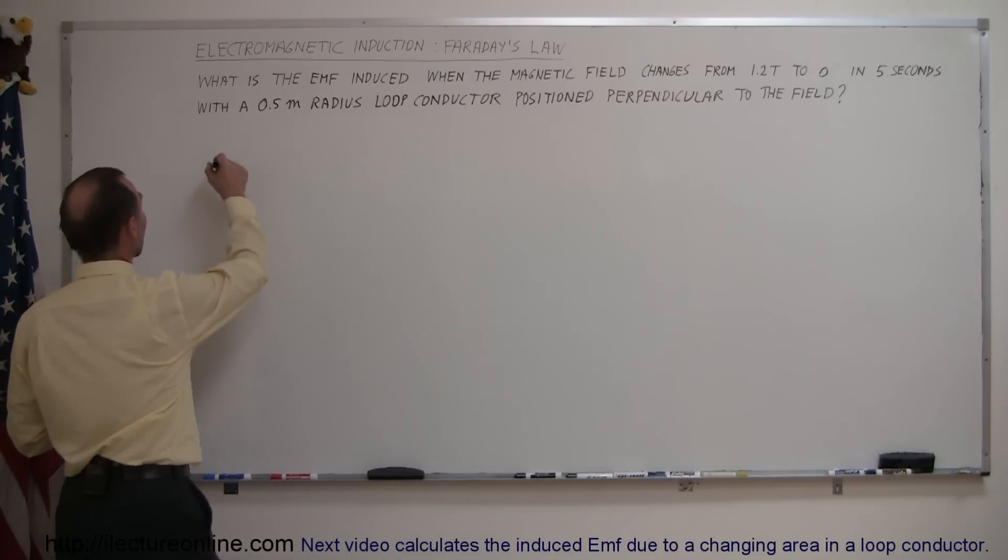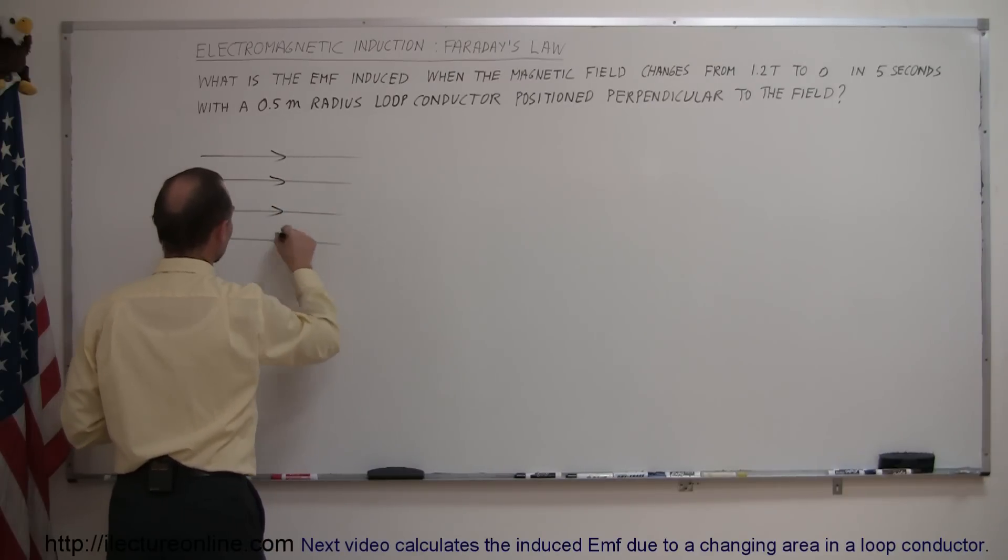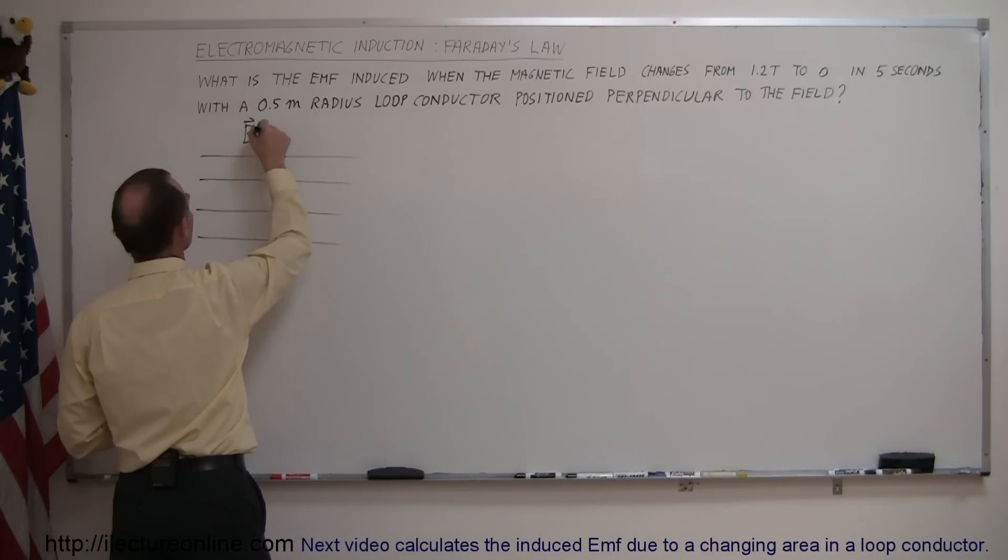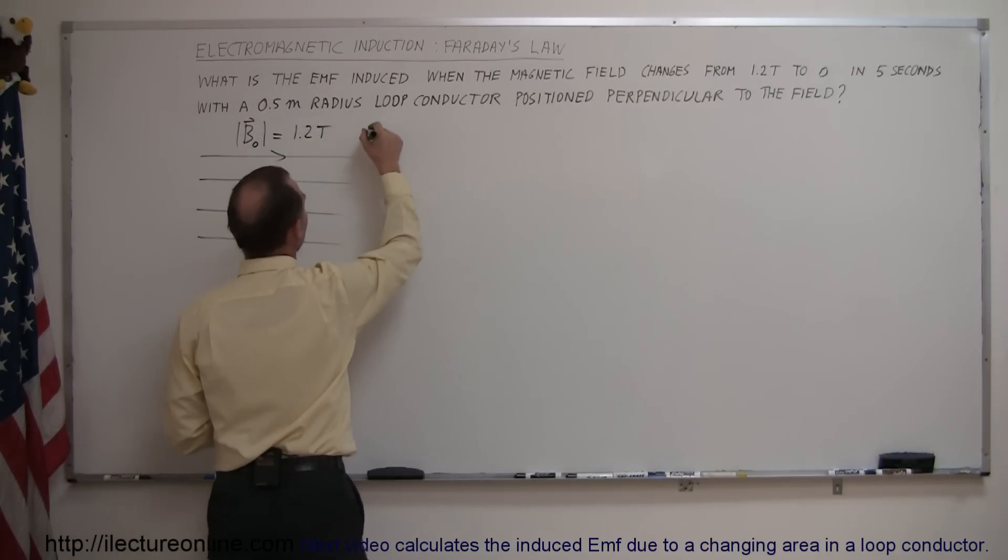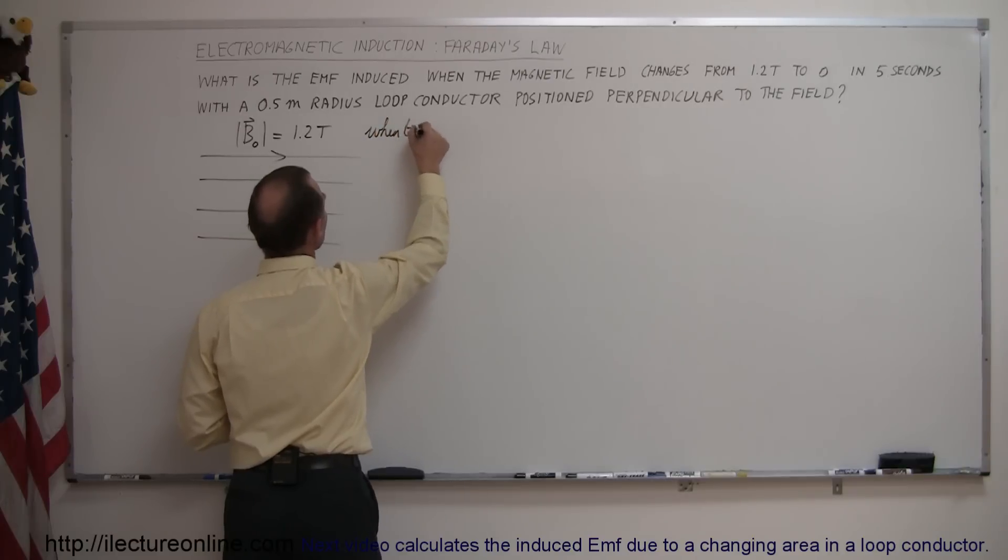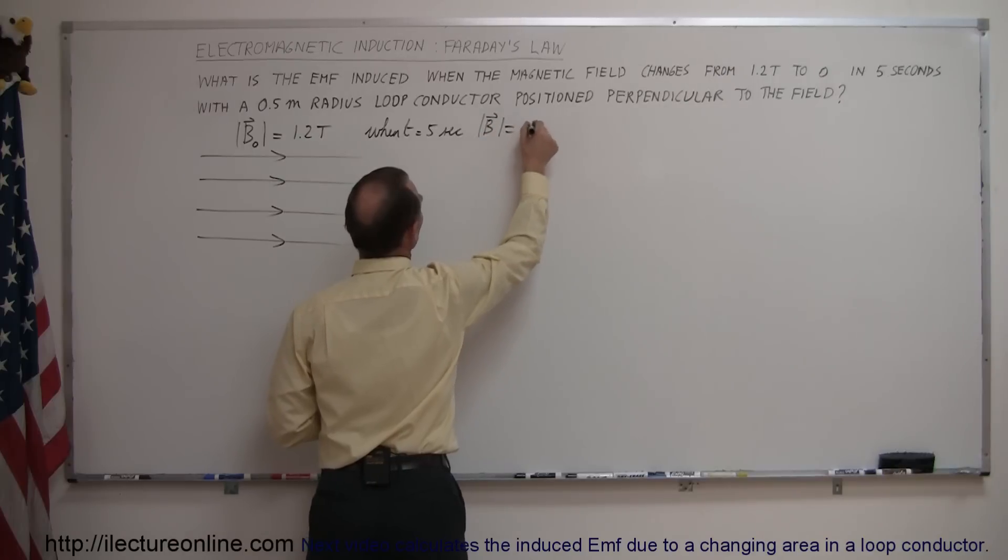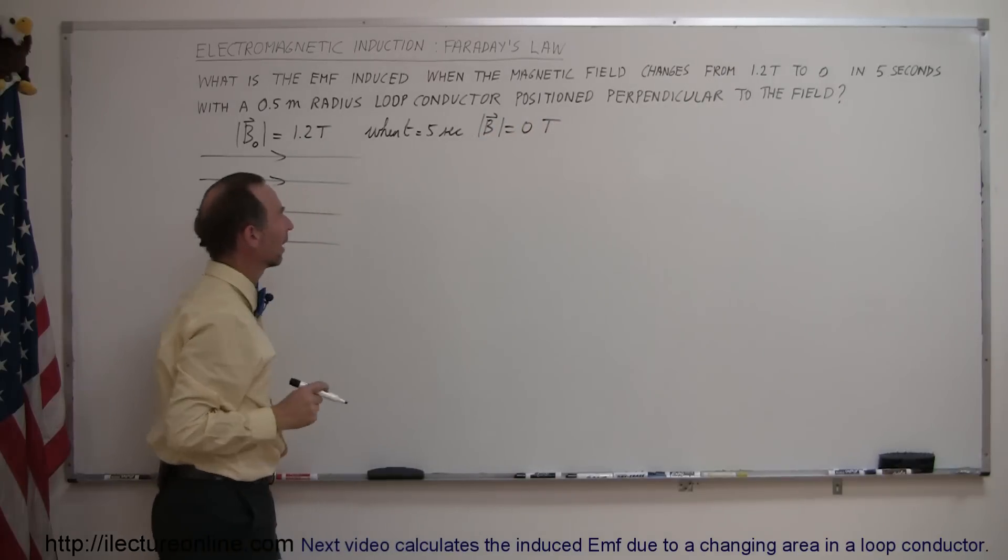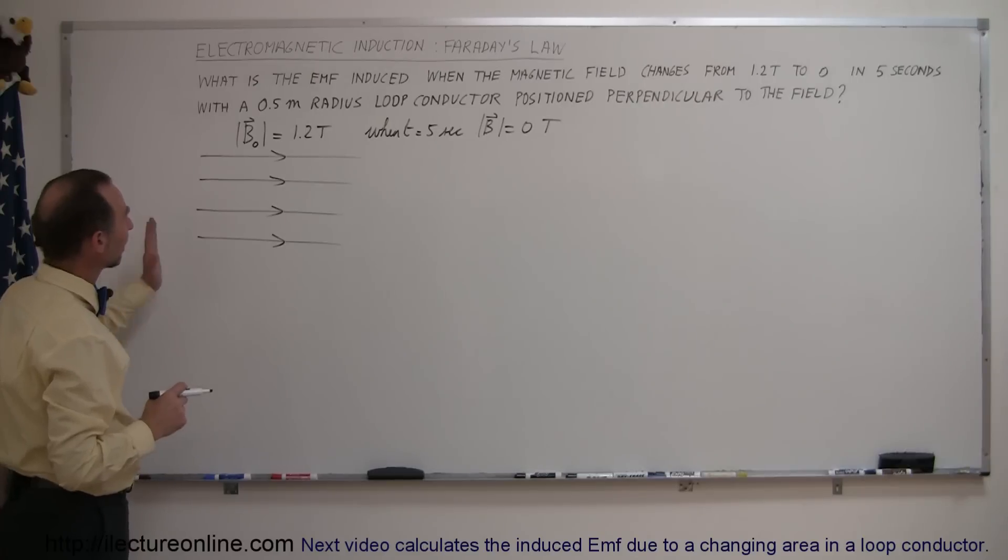So what this says is, imagine that we have a magnetic field, the initial strength of the magnetic field is equal to 1.2 teslas and after five seconds, when t equals five seconds, the magnetic field strength is equal to zero teslas. Now we have a magnetic field that changed from 1.2 to zero teslas.